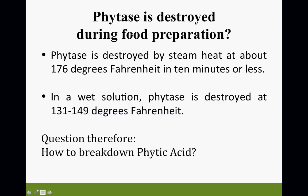Phytase is destroyed during food preparation. Phytase is destroyed by steaming heat at about 176 degrees Fahrenheit in 10 minutes or less. Once you get that temperature up to about 176 degrees Fahrenheit or higher, you automatically destroy all of the phytase — the enzyme used to neutralize phytic acid in the food. That's why we mentioned low, slow, continuous heat. If you can keep that temperature below 176 degrees, you will not destroy the enzyme that aids with the neutralization of phytic acid.